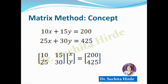We read the matrix form as: 10x plus 15y equals 200, and 25x plus 30y equals 425. Conversely, if you have a matrix equation, you can convert it back into simultaneous equations and read it the same way — 10x plus 15y equals 200, and 25x plus 30y equals 425 — and then solve it.